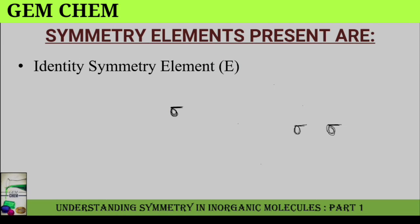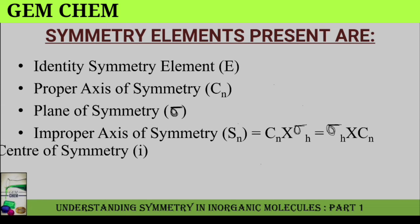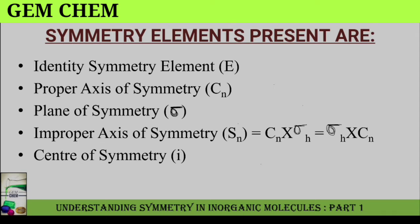First, let us review the different symmetry elements. First is the identity symmetry element where there is a rotation of 360 degrees or 0 degrees, and the number of operations possible is 1. For the proper axis of symmetry, n is the number of operations and the number of operations possible is n minus 1. For the plane of symmetry, reflection is considered and the number of operations is 1. For the improper axis of symmetry there is a combination of Cn and sigma h. For the center of symmetry, we have only one operation.